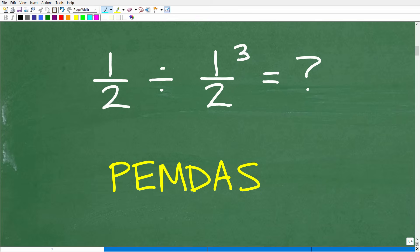So, in other words, I have 1 half divided by 1 half cubed. I could do this problem in two ways. I could do this first, 1 half cubed, figure that out. And then I could take 1 half and divide it by the answer of this. Or,